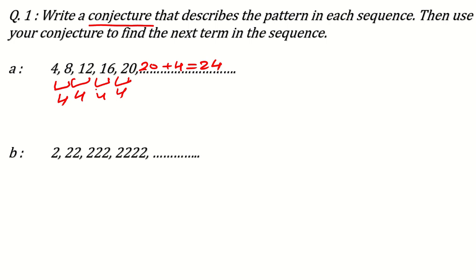Similarly, here 2, 22, 222, 2222. So what you can see here, in every number, in every term, number of digits is increased by 1. Means 2 is increased in every term. So in the next term, what you will have? You will have 5 times 2. So it will be 2 three times, 4 times, 5 times. Means 22222. Like this, you can find the next term.